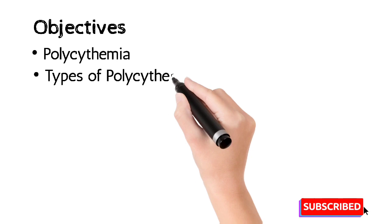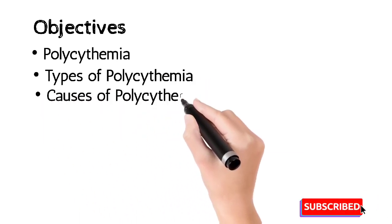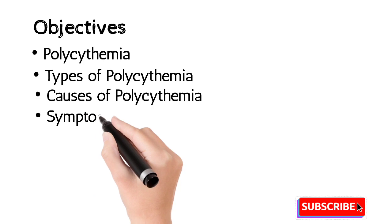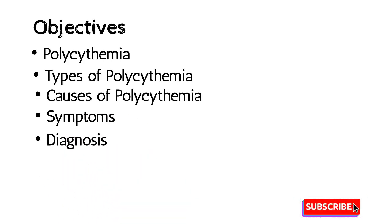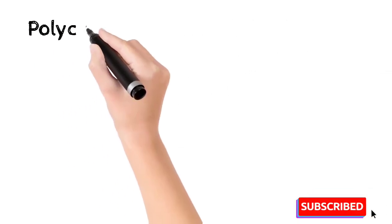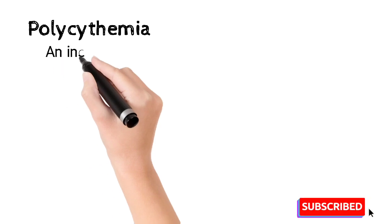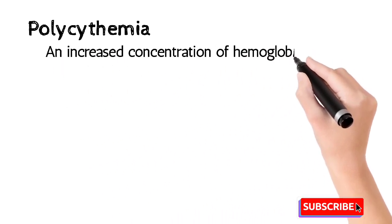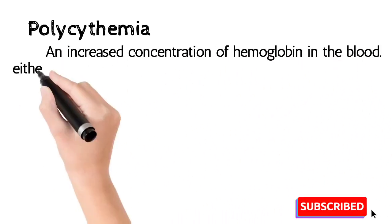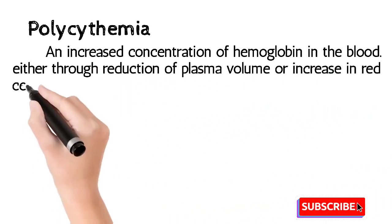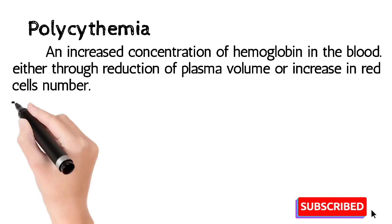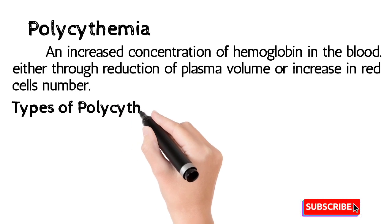Let's begin with polycythemia. Polycythemia is a condition in which there is an increased concentration of hemoglobin in the blood, either through reduction of plasma volume or an increase in red cell number. There are different categories, but we will discuss the two major types: primary polycythemia and secondary polycythemia.